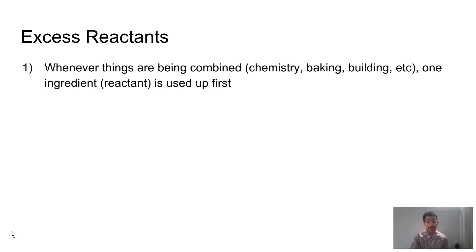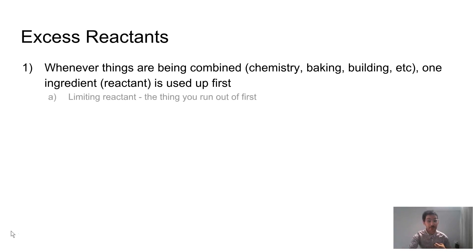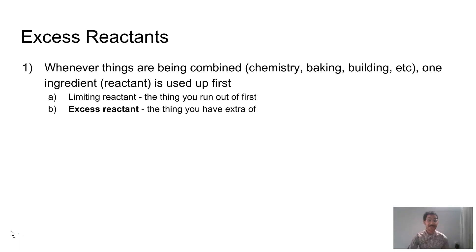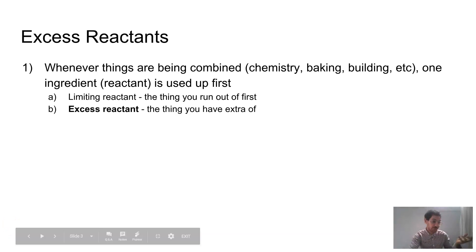Excess reactants — whenever things are going to be combined, whether it's chemistry, baking, building, etc., one of our reactants is going to get used up first. That's the limiting reactant, the one you run out of first. However, the excess reactant is anything else that you have left over at the end — any of those starting materials that haven't been used up because you ran out of one of your materials.